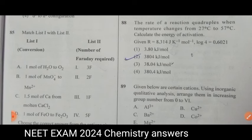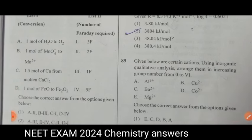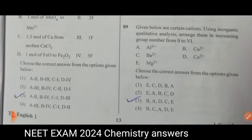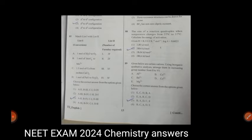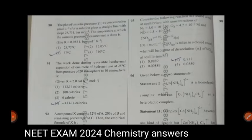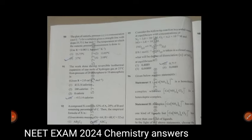3804 KJ per mole. Given below are certain cations. Using inorganic qualitative analysis. Answer is third one. Now we will move to the 90th question. Question number 90, the plot of osmotic pressure. Answer is third one.